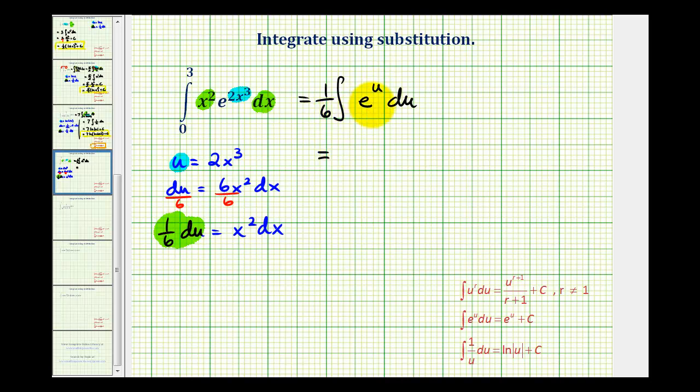The anti-derivative of e to the u is just going to be e to the u. So we'll have one sixth e to the u, but u is two x cubed.